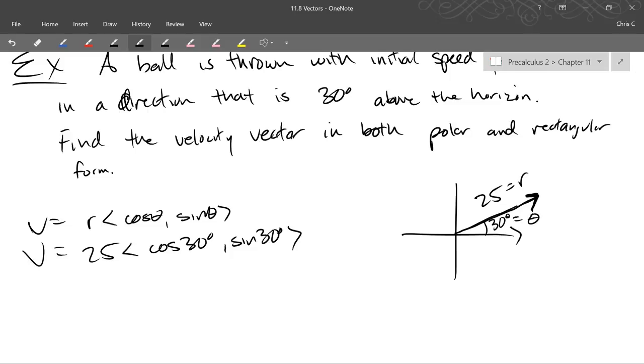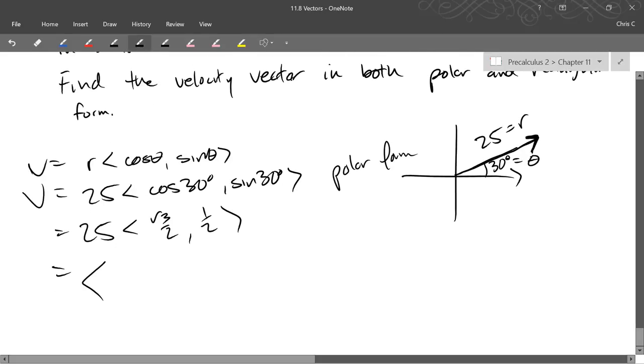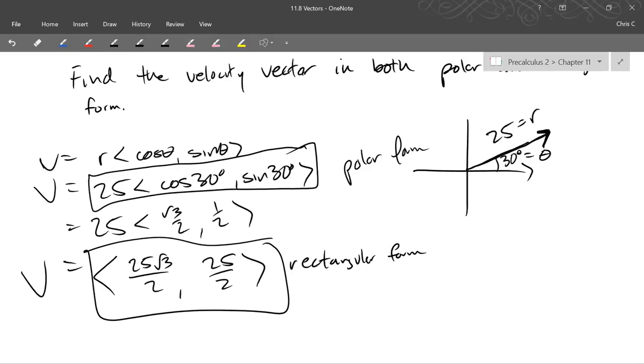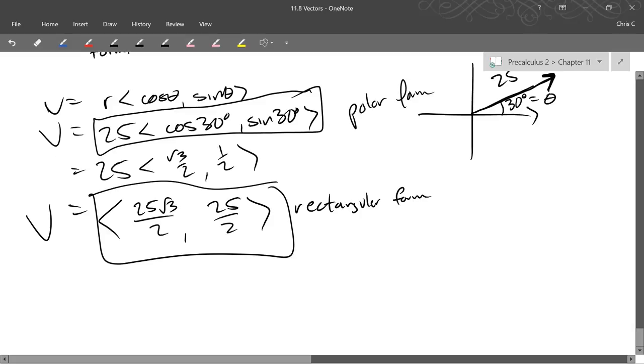How do we go to rectangular form? It's actually very easy. You evaluate cosine, evaluate sine, and distribute. So this is our polar form answer. So cos 30 is square root 3 over 2, sine 30 is 1 over 2, and distribute your 25 in. So we have 25 square root 3 over 2, comma 25 over 2, and this is rectangular form. And we'll put a box around both of these. So depending on what you're doing, one of these forms may be more useful than the other form.